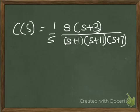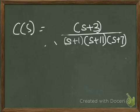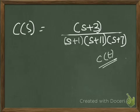Using simple cancellation, I am going to cancel s and s. So this equation becomes C(s) = (s+3) / [(s+1)(s+11)(s+7)]. But what is the time response? The time response is c(t). So when will you get c(t) from C(s)? The only thing you need to do is apply the inverse Laplace transform.